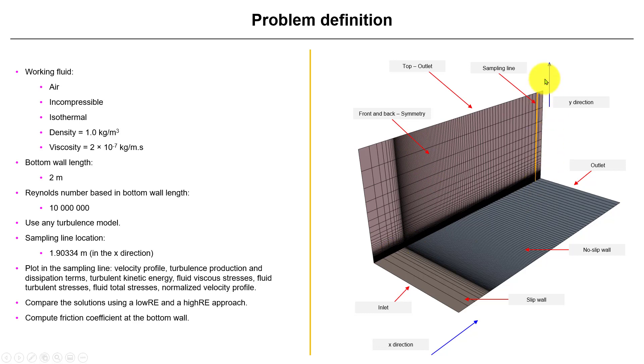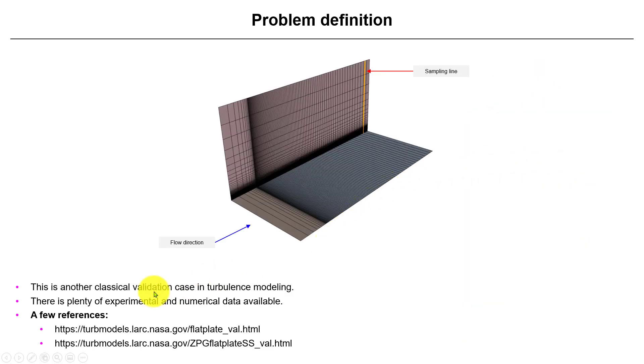We can compare friction coefficient but also velocity profile. Here you have a few references. There's a lot of data to validate this case for different Reynolds numbers, 10 million, 6 million, 5 million, 3 million, also different Mach numbers and also with compressibility and heated plate.